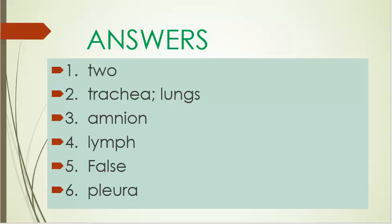Answers. Number one is two. Number two is trachea, lungs. Number three is amnion. Number four is lymph. Number five is false. Number six is pleura.